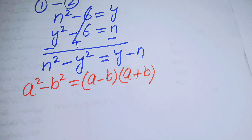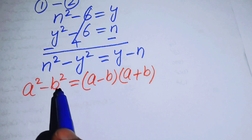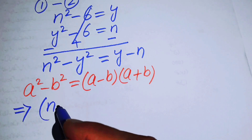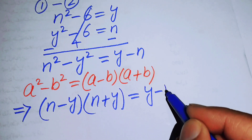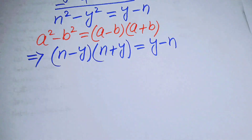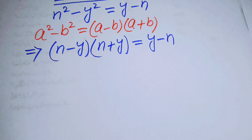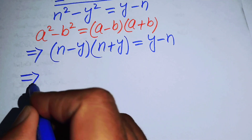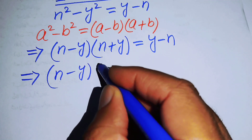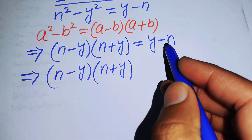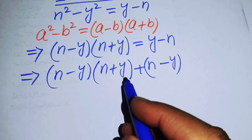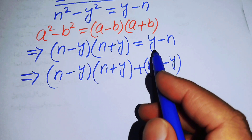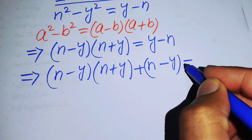Applying this formula to the left hand side, the equation becomes (n - y)(n + y) = y - n. Moving all terms to the left hand side gives us (n - y)(n + y) + n - y = 0.